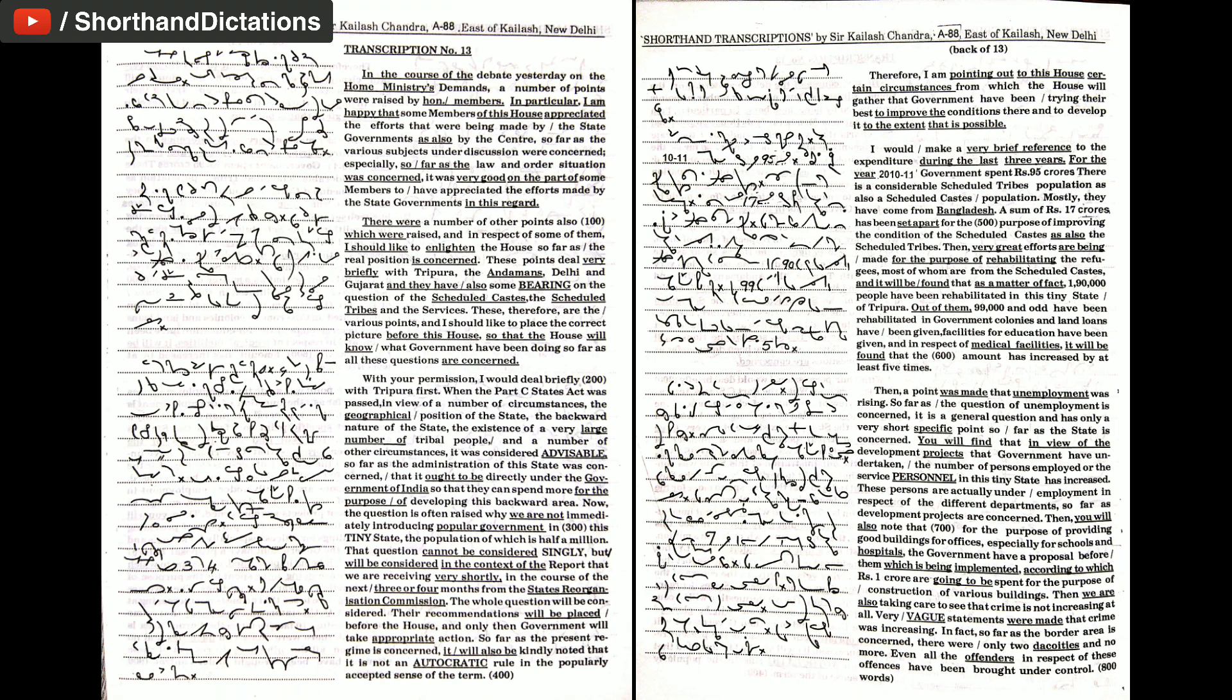I would make a very brief reference to the expenditure during the last three years. For the year 2010-11, government spent Rs. 95 crores. There is a considerable scheduled tribes population as also a scheduled castes population. Mostly, they have come from Bangladesh. A sum of Rs. 17 crores has been set apart for the purpose of improving the condition of the scheduled castes as also the scheduled tribes.